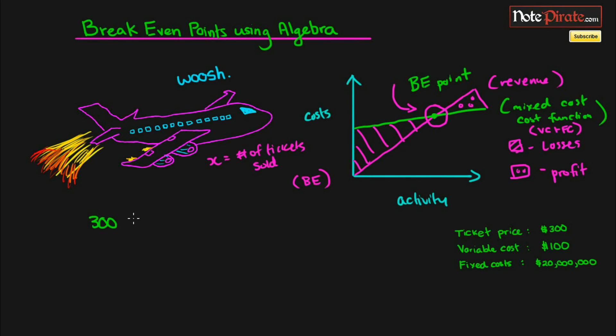We'll start constructing our break-even equation. The ticket price is $300, so that's going to go where the sales price is, so 300 times X minus 100 since that's the variable cost times X minus the fixed cost which is 20 million equals zero. Then we can just simplify it.